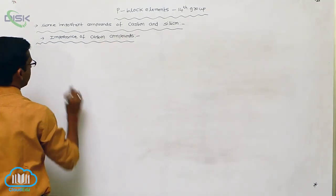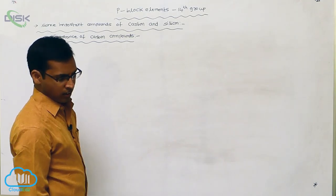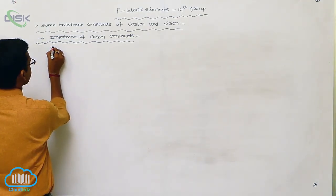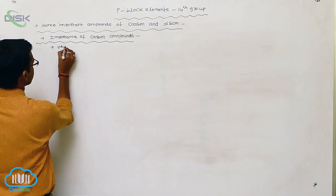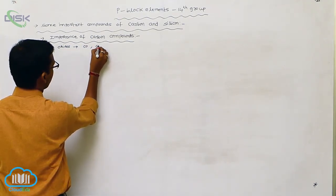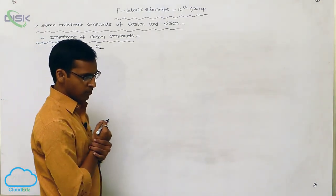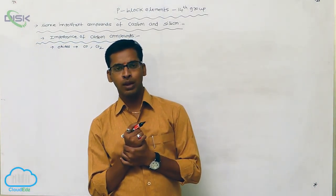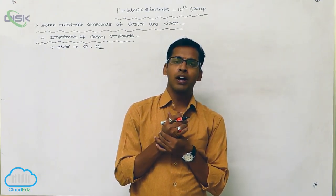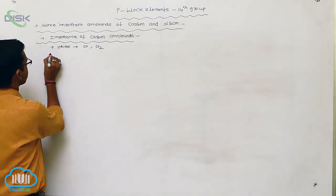Carbon forms two types of oxides: one is carbon monoxide and carbon dioxide. So carbon has the ability to form two types of oxides — carbon monoxide and carbon dioxide.